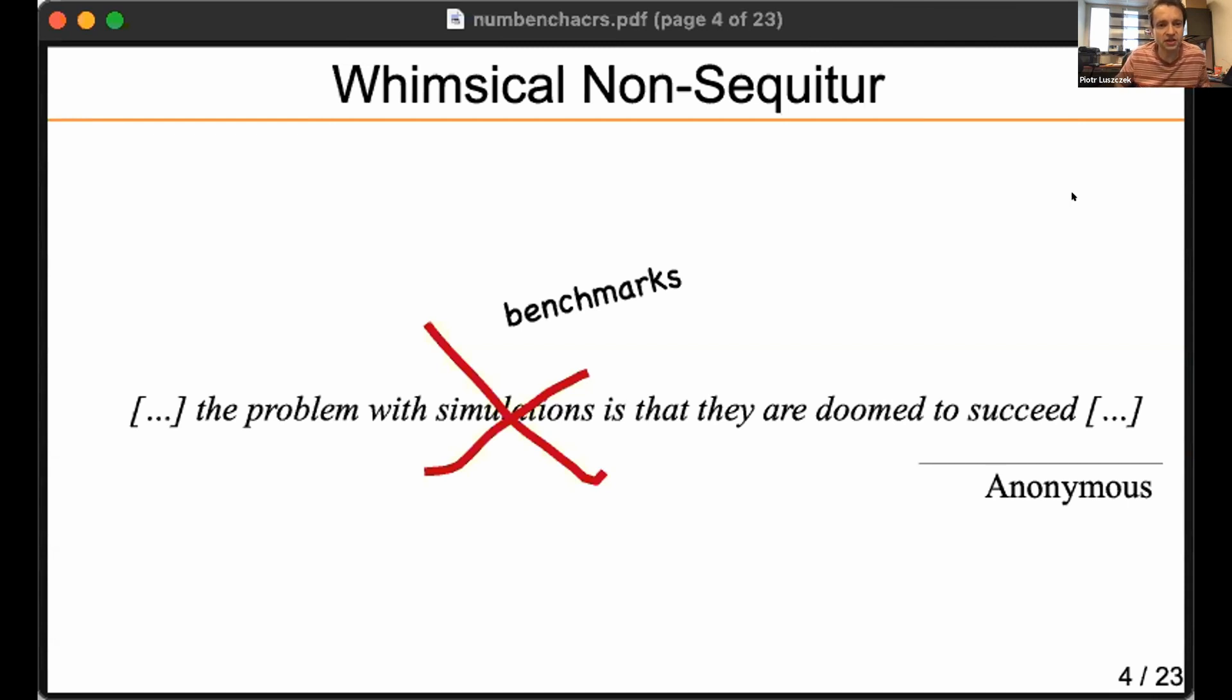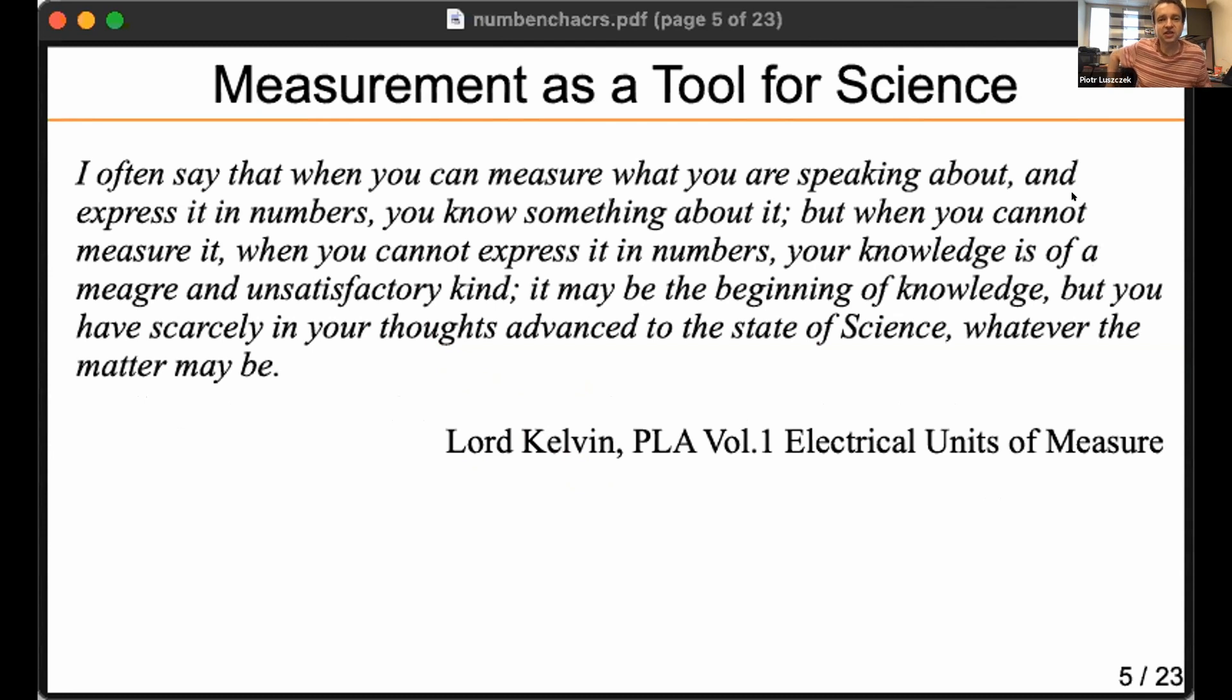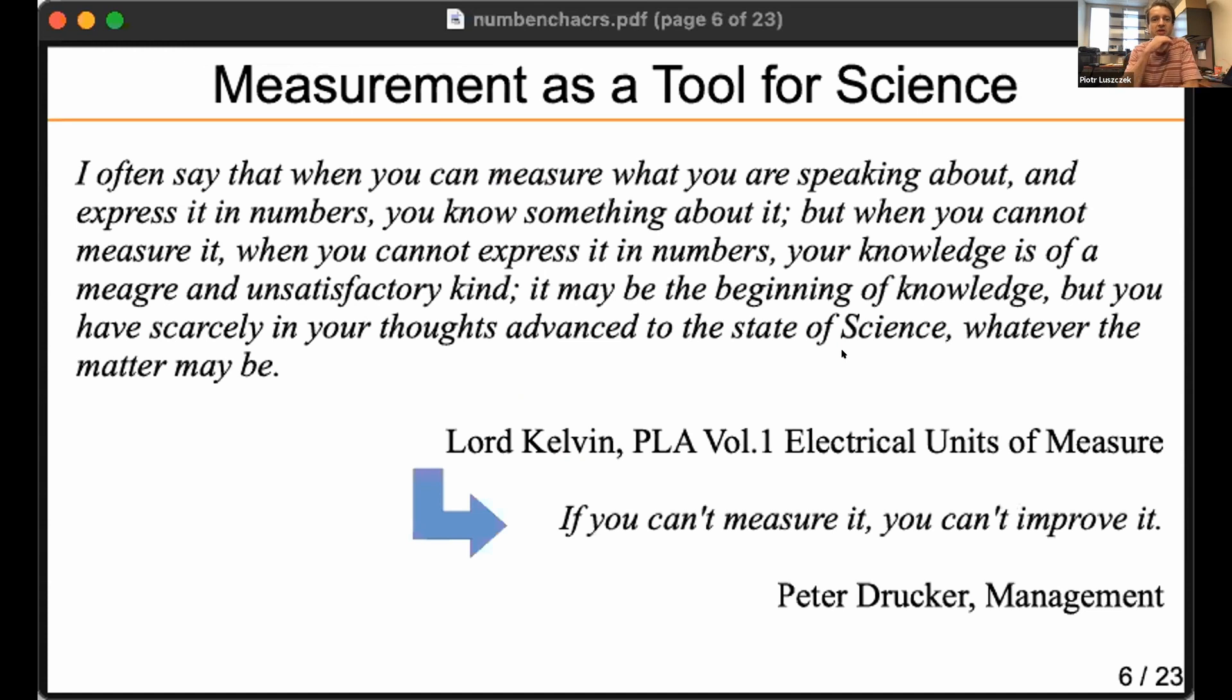Let's take a view of some of the benchmarks and how we try to make them useful. Lord Kelvin wrote quite a while back a very lengthy quote that basically says we need to measure things in order to make progress in science. This was later nicely summarized by Peter Drucker: if you can measure it, you can improve it. That's the basic motivation for writing benchmarks.